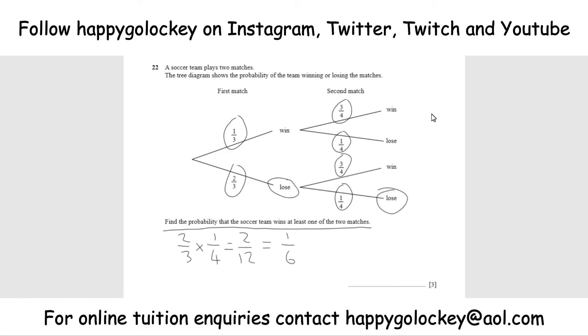That's the only time where you haven't won at least one of the two matches. So basically we need to work out 100% or one take away lose-lose. One take away one-sixth. Well, if one is six-sixths and we've got to take one-sixth away, the final answer is five-sixths.